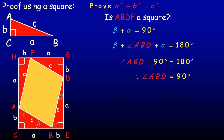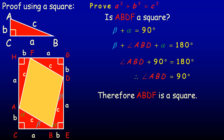So it has to be a square — it's a quadrilateral with four equal sides, because all these C's are the hypotenuses, and all the angles are right angles. So we can conclude that A, B, D, F must be a square. That was just to prove that the inner figure is a square. Now we can actually prove the Pythagorean Theorem.